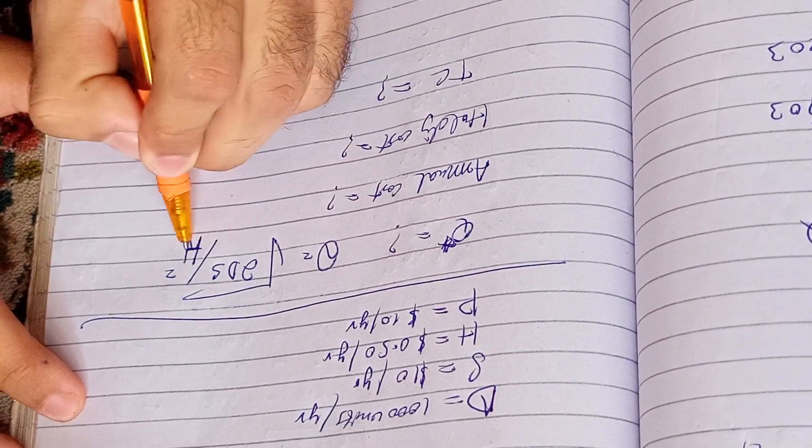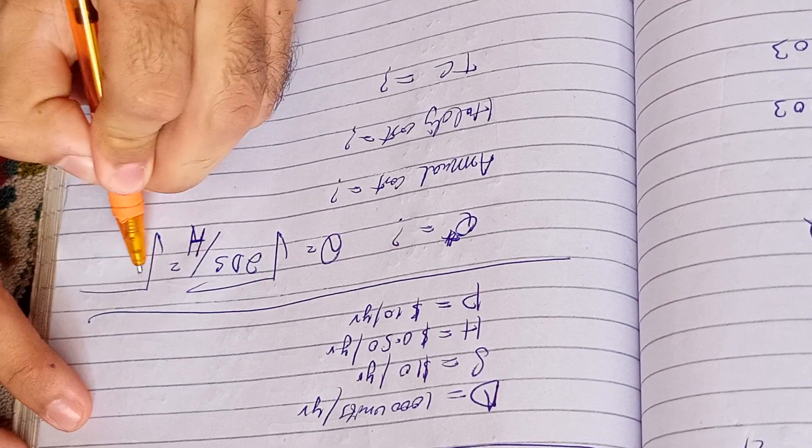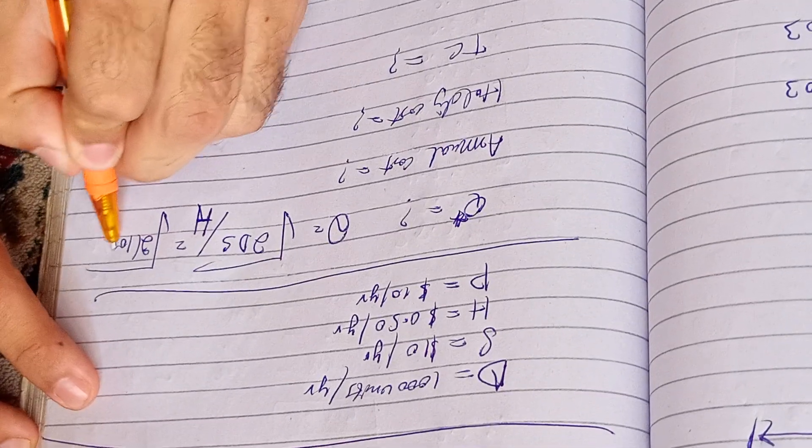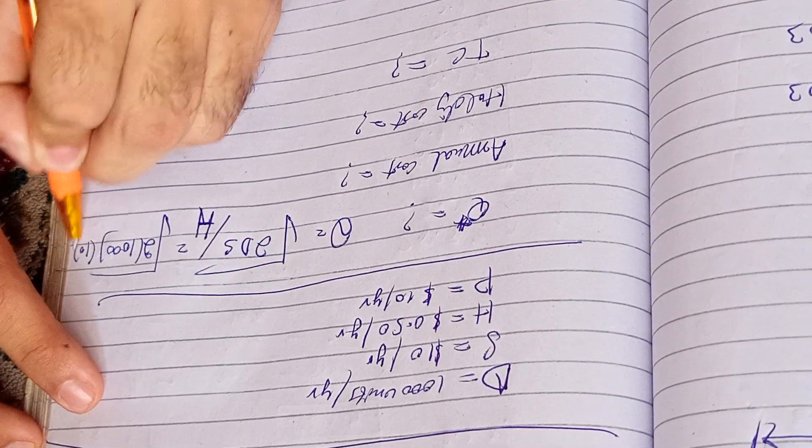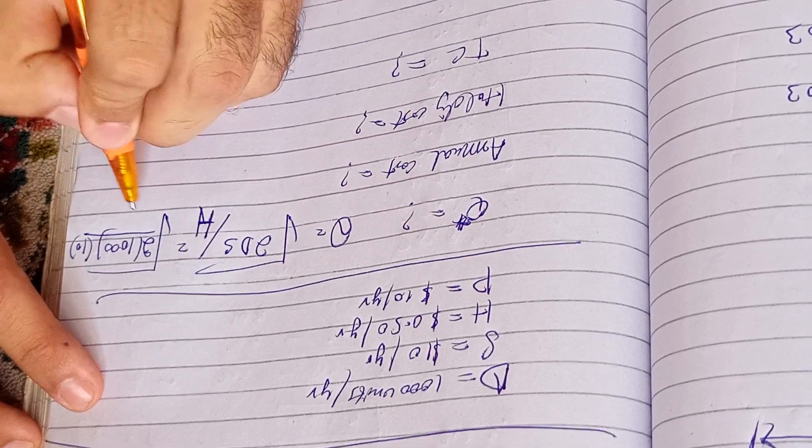D is equal to 1000, S is equal to 10, H is equal to 0.5.